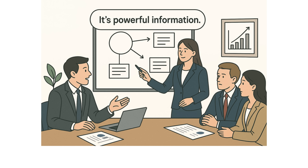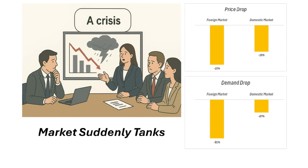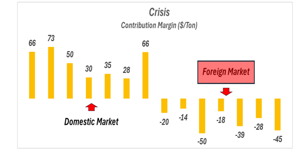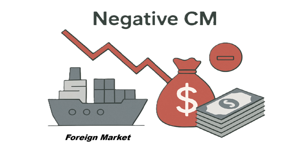The sources also looked at a different scenario — a crisis. Imagine the market suddenly tanks: both prices and demand drop significantly. The price drop is so bad that for all of DemoSteel's products sold on the foreign market, the contribution margin actually goes negative. They are literally losing money on every ton they export — selling it destroys value.